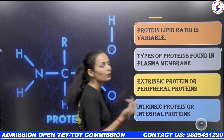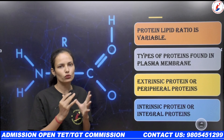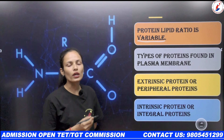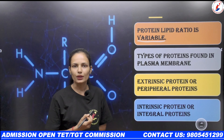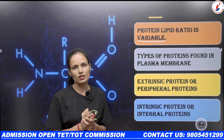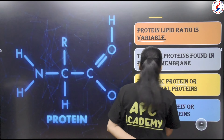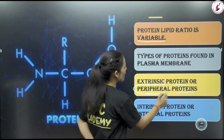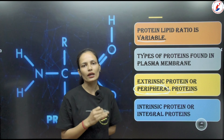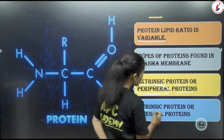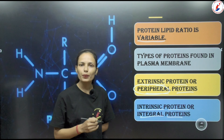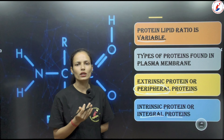The protein-to-lipid ratio of 40% and 52% is specifically for RBCs; otherwise it is variable. Two types of proteins are present in the plasma membrane, categorized based on ease of extraction: extrinsic proteins, also called peripheral proteins, which can be easily extracted; and intrinsic proteins, also called integral proteins, which are buried in the phospholipid bilayer — either partially or completely buried.